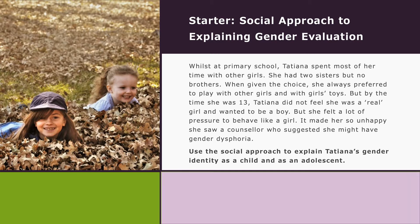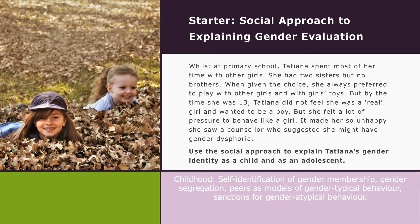In terms of childhood, you could have said that self-identification of gender membership is crucial during childhood. Gender segregation also occurs during childhood, so girls tend to play with girls, boys tend to play with boys. Peers act as role models for gender-typical behaviour — girls will emphasise playing with dolls, boys will emphasise playing with footballs, etc. They'll also sanction gender-atypical behaviour.